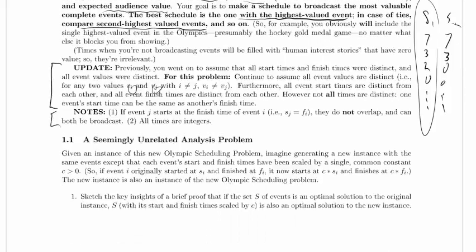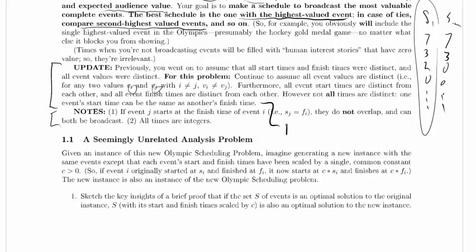Okay, so we could have two events that look like here's start and end of one event, and here's start and end of another event, which brings up the question of whether these conflict, which is in the notes. If event j, here's event j, starts at the finish time of event i, so here's the start time of event j and the finish time of event i, and they are indeed equal, they do not overlap and can both be broadcast, so these two are not overlapping. I guess we could draw an interval like this to suggest it's got an open end if we wanted to.